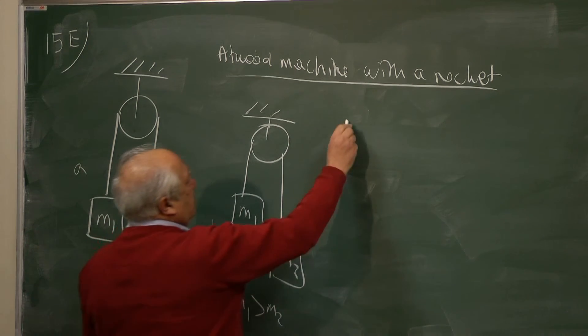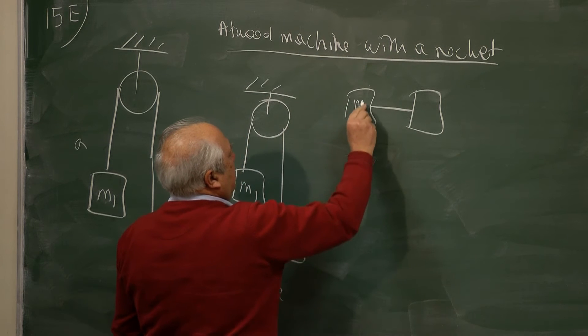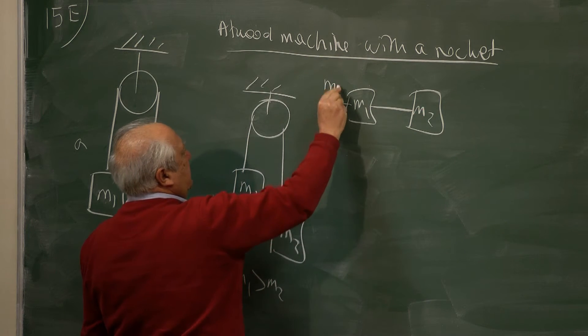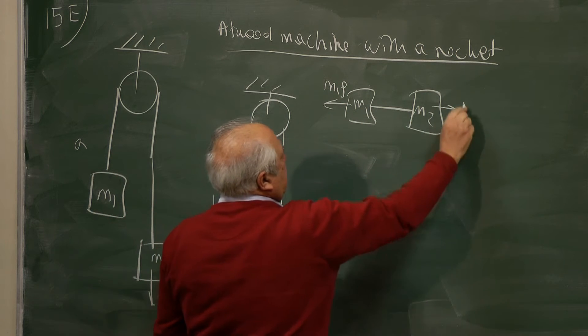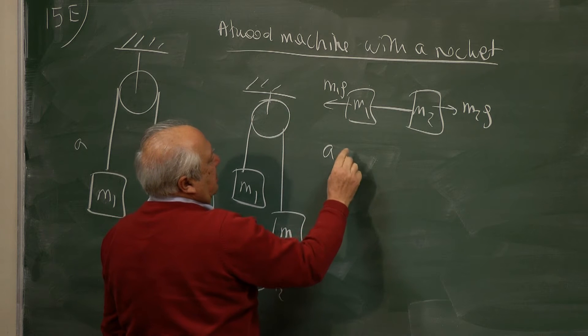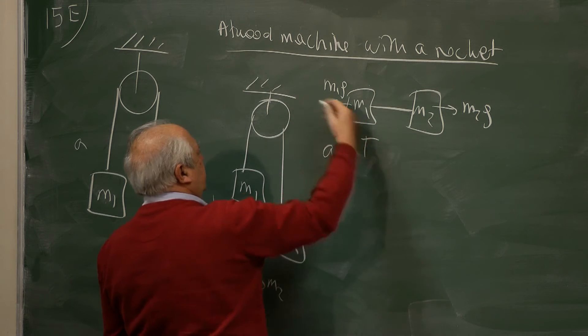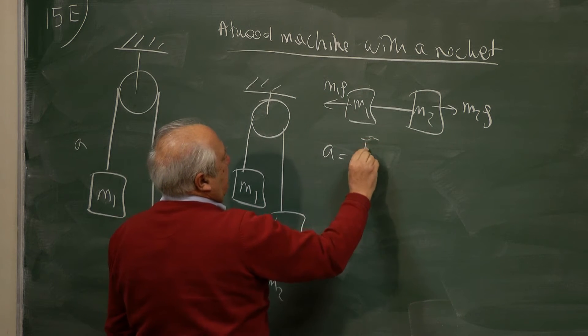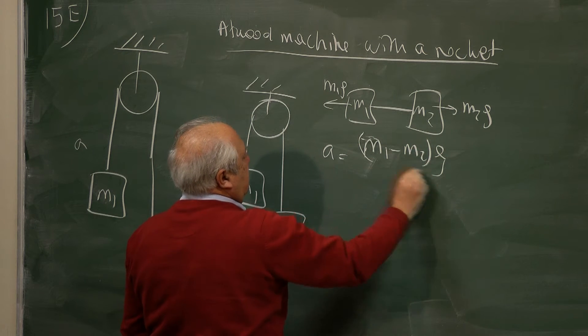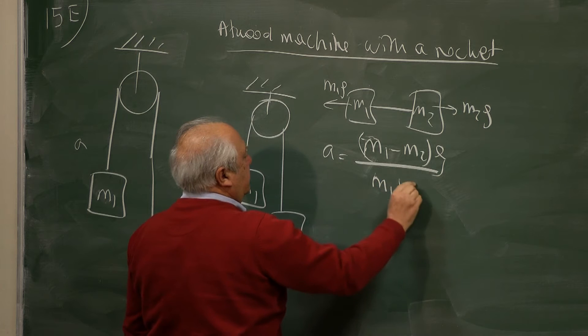Simply we can look at it like this. M1, M2. This is pulled to the left with M1 G. This is M2 G. Therefore the acceleration is the net force. It's moving this way. M1 minus M2 G over M1 plus M2.